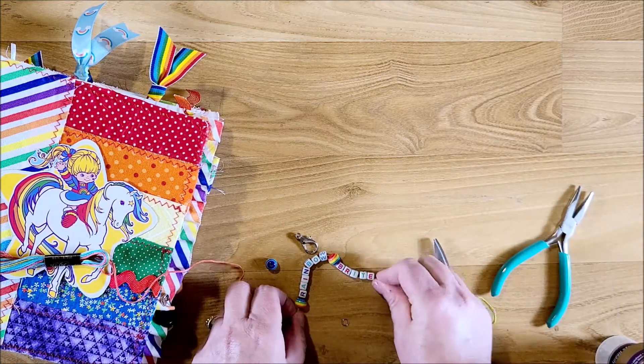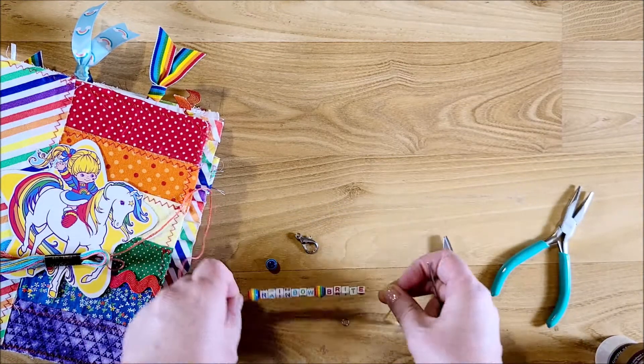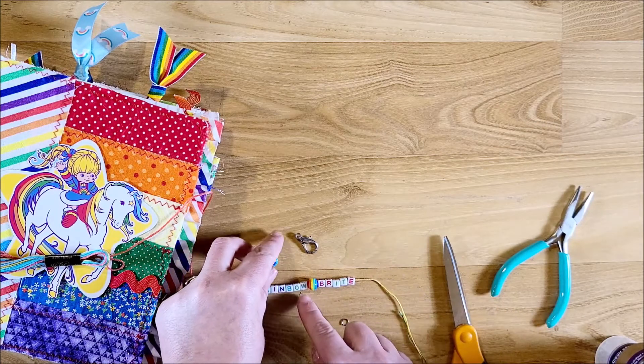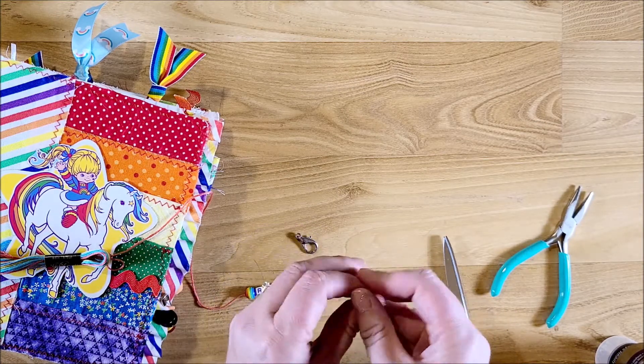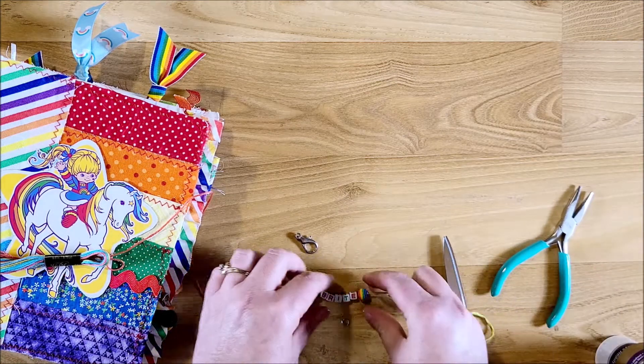You just want to make sure you have your letters all the right direction. And then after bright, and that is the correct spelling for rainbow bright, the name of the character. And I'm going to put the last one there.